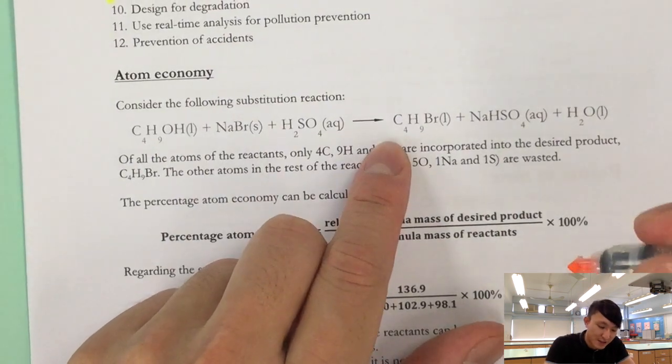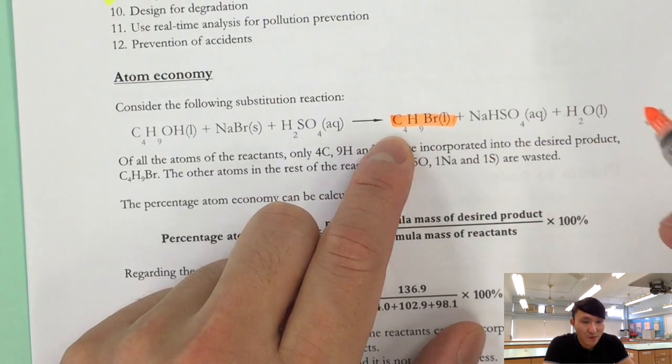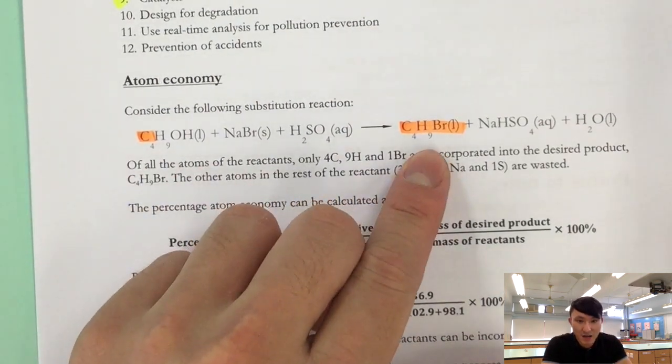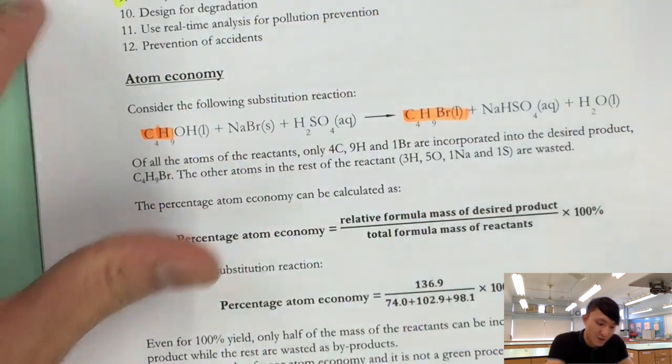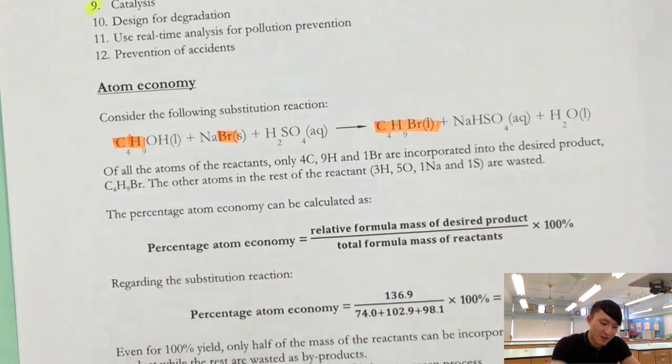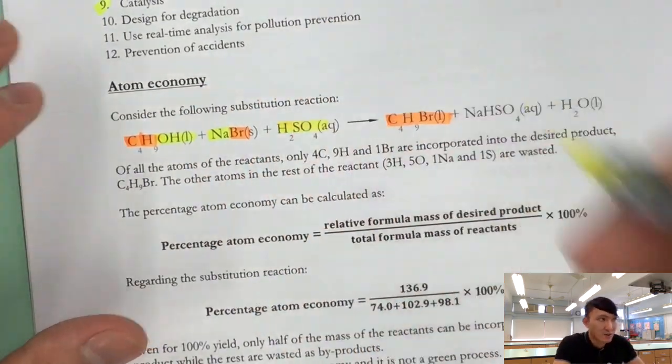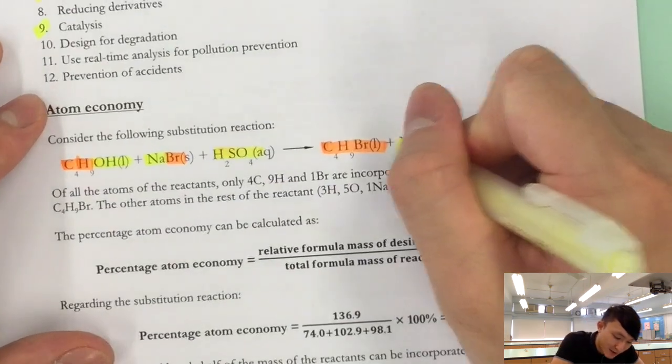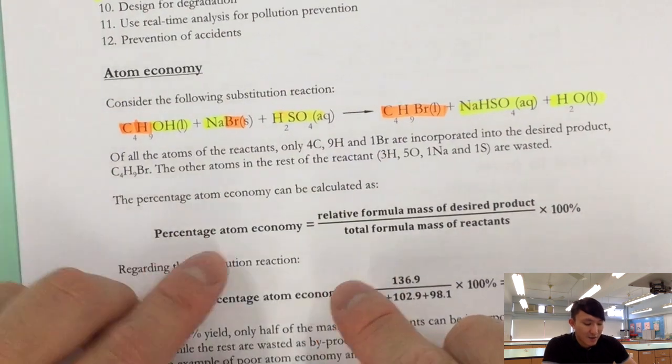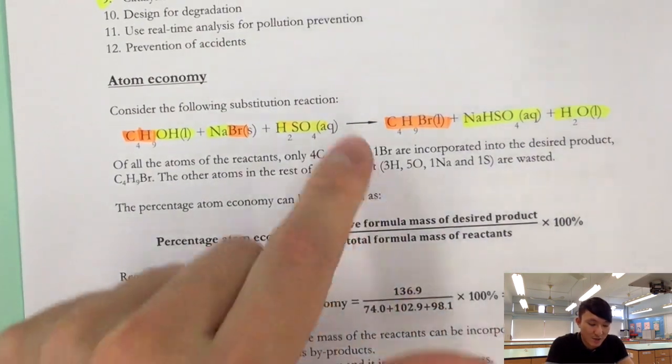For example here we want to make 1-bromobutane. You notice that the C4, the 4 carbons, are coming from the butan-1-ol. Also the 9 Hs are coming from butan-1-ol. The Br here is coming from sodium bromide and the rest of the atoms are wasted. So this OH is wasted, Na is wasted, and they end up being the byproducts. So here when we calculate the atom economy we will put the relative formula mass of our desired product which is this one, and then over the total formula mass of all the reactants.